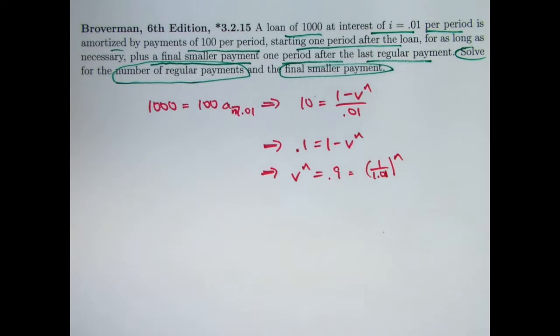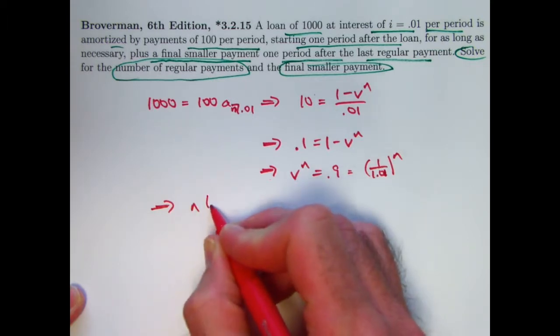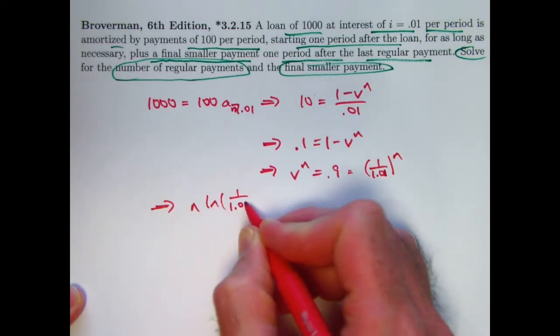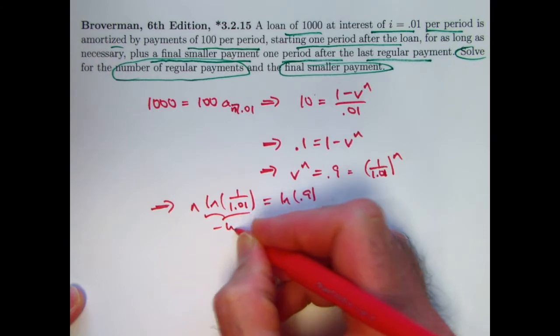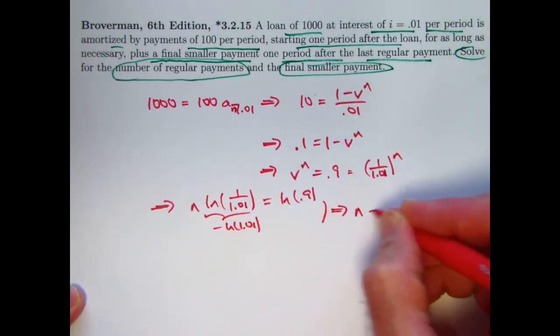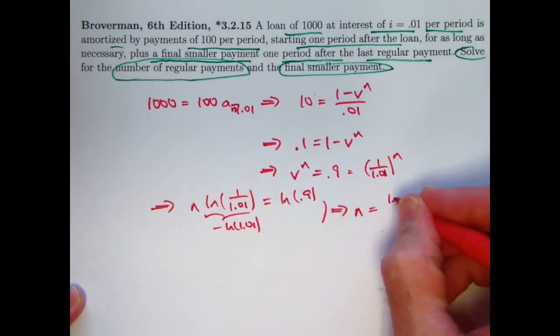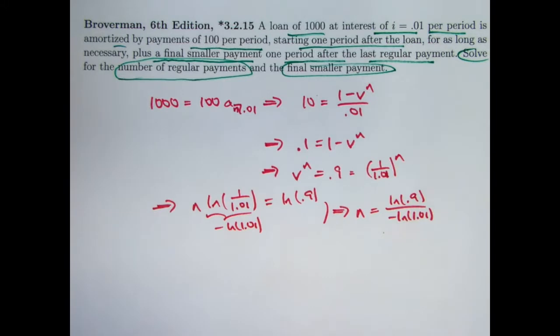I need to solve this for n by taking the log of both sides. So I would get by properties of logs n times natural log of 1 over 1.01 equals natural log of 0.9. This is the same as negative natural log of 1.01. And so that's going to imply that n, after dividing both sides by this, is natural log of 0.9 divided by negative natural log of 1.01. This will be a positive quantity overall because natural log of 0.9 itself will be a negative number, whereas natural log of 1.01 is positive.